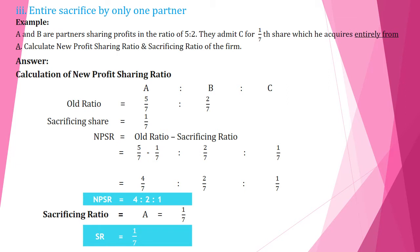The third topic is entire sacrifice by only one partner — meaning only one partner sacrifices their share to the new partner. A and B are partners sharing profits in the ratio of 5:2. They admit C for 1/7 share, which C acquires entirely from A. Calculate new profit sharing ratio and sacrificing ratio. Here A alone is sacrificing his share to C, so we deduct only from A.